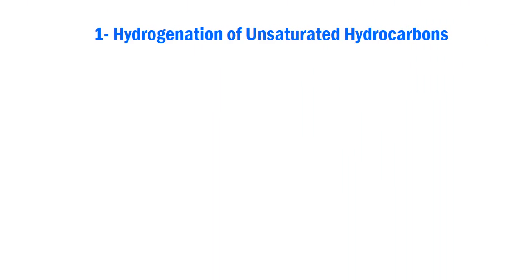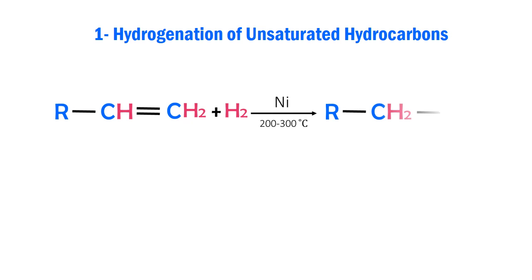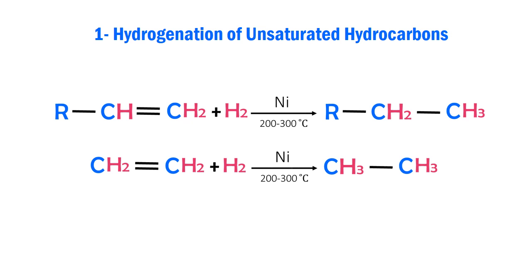Hydrogenation of alkenes or alkynes in the presence of nickel at 200 to 300 degrees Celsius yields alkanes. The hydrogenation can also be carried out in the presence of platinum or palladium at room temperature, but these catalysts are more expensive than nickel.